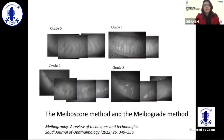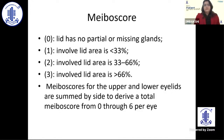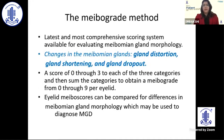To grade glandular dropouts and distortion: Grade 0 is no gland dropouts; Grade 1 is less than 33% dropout; Grade 2 is 33–66% dropout; and Grade 3 is more than 66% dropout. In the MeibScore method, upper and lower lid scores (0–3 each) are summed to give a total MeibScore of 0–6 per eye. The MeibGrade method measures gland distortion, shortening, and dropout — scoring 0–3 for each category — to obtain a MeibGrade of 0–9 per eyelid.